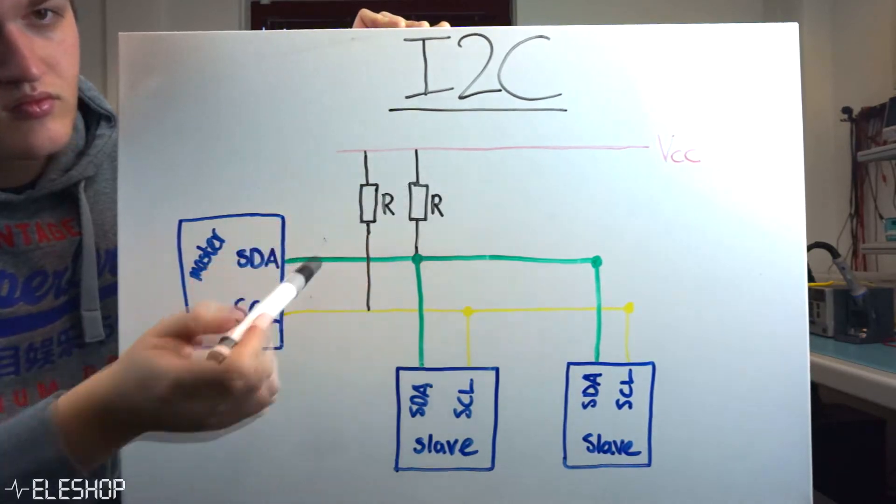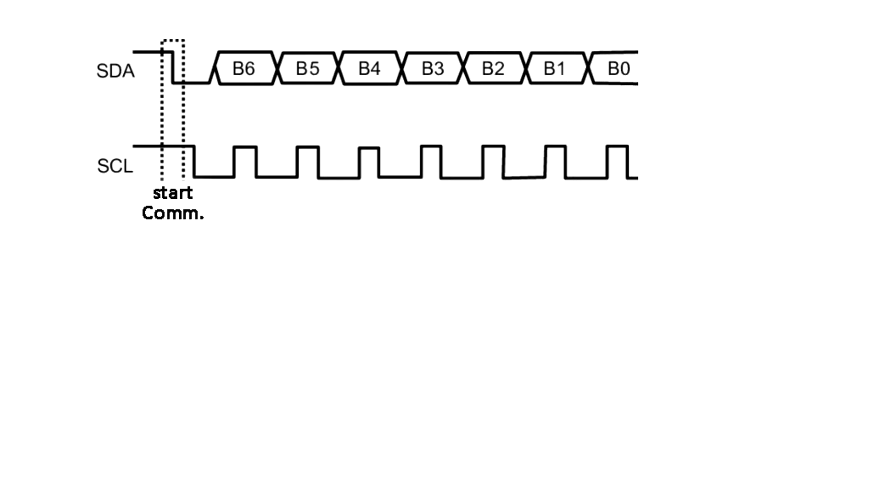The I2C algorithm works as follows. First, the master starts the communication by changing the data line to low and then synchronizing the clock with the slave. Then a 7-bit address is sent to the data line so connection will be made with the correct slave. This is important because if there are multiple slaves with the same address, collisions will happen since all modules are connected to the same data line.